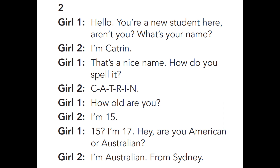Dialogue 2. Hello. You're a new student here, aren't you? What's your name? I'm Katrin. That's a nice name. How do you spell it? C-A-T-R-I-N. How old are you? I'm 15. 15? I'm 17. Hey, are you American or Australian? I'm Australian. From Sydney.